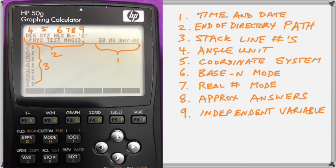Then for section two, along the same line with the time and date, we have the end of the directory path. You will see we have a slash mark in front of the physics directory, and the subdirectory path would be something above the physics, then below the physics would be test and mags.